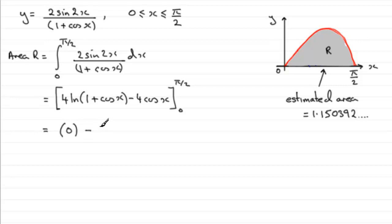Then minus, and we put the 0 through now. Cosine of 0 is 1, so we get the natural log of (1 + 1), natural log of 2, and then this will be 4 natural log of 2. Put 0 into this term and we get 4 times the cos of 0 which is 1. 4 times 1 is 4. So we get minus 4.